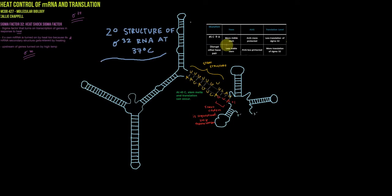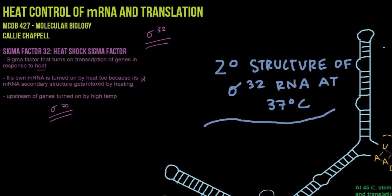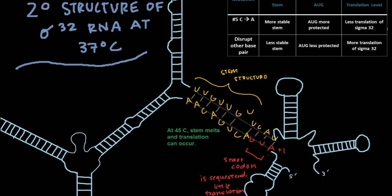So here is the secondary structure of sigma 32 RNA at 37 degrees Celsius. And what's really cool is it has a really cool structure. But I want to point out a couple of key features. The first is, and I'm going to zoom in on these features right now.